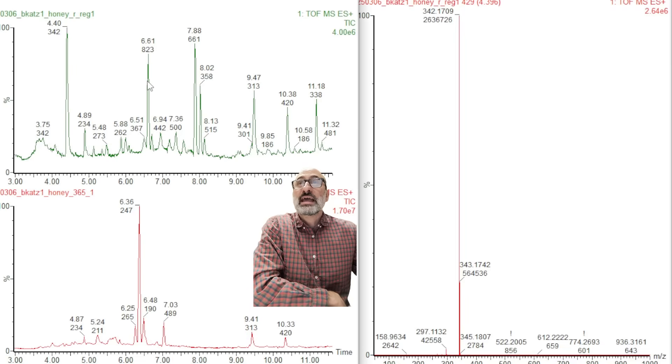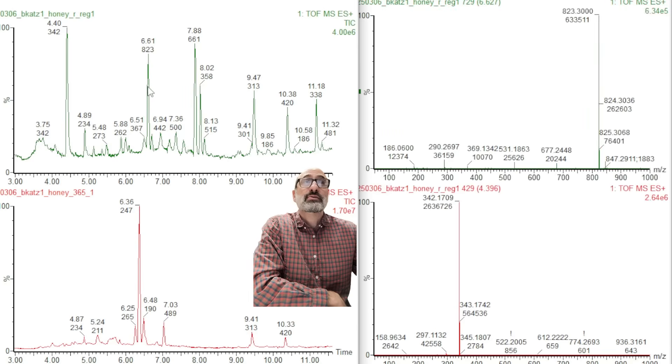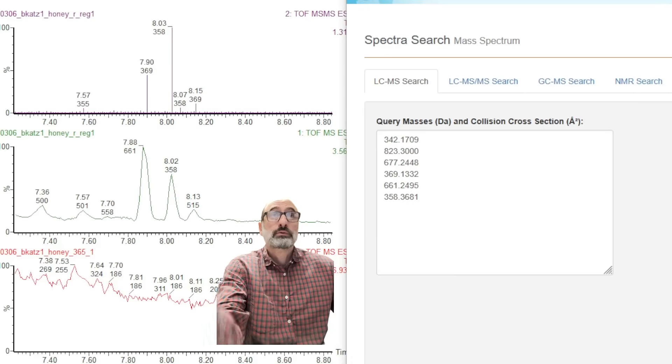We have this 823 mass, which has kind of that characteristic breaking product of a glycosylated molecule. So some sort of plant-derived molecule. So this one I'm kind of hopeful is plant-derived. This one definitely looks synthetic.